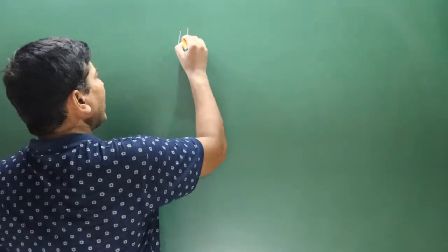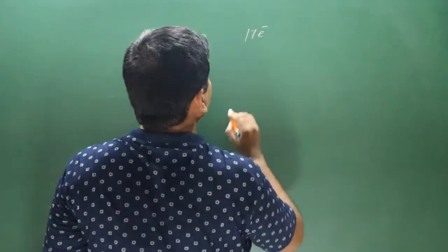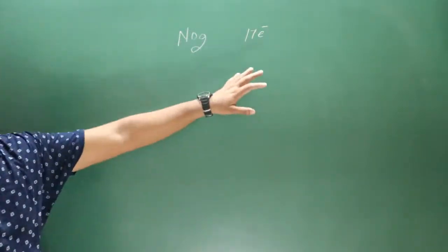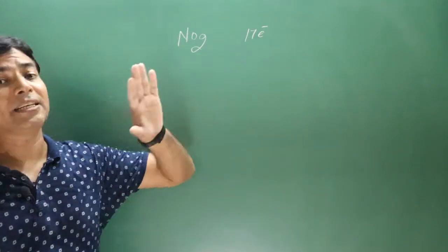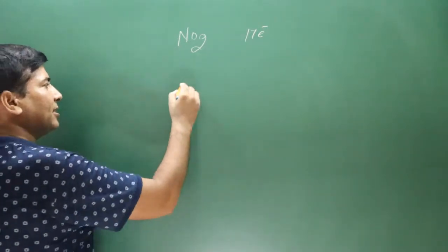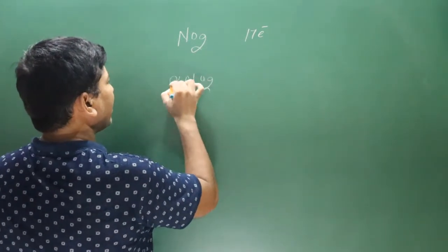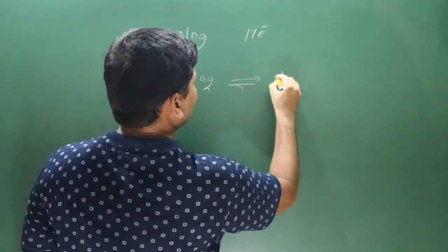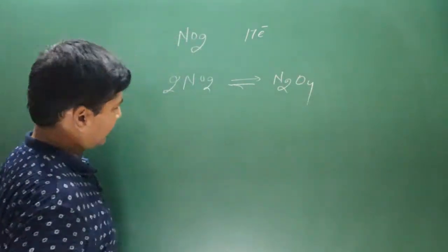Nitrogen dioxide has 17 electrons in its outermost shell — an odd number — so it is in an unstable state. That is why nitrogen dioxide undergoes dimerization to produce dinitrogen tetraoxide (N2O4).